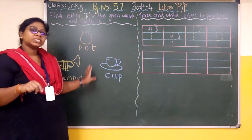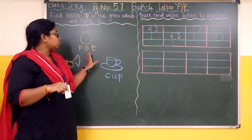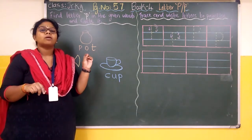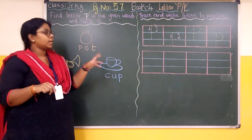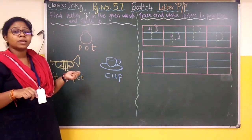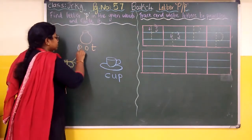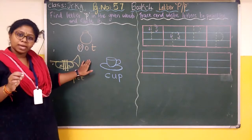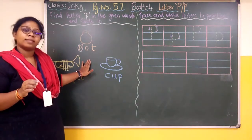I have three images. The first one is 'pot' — P-O-T, pot. So where is the letter P coming? The first letter itself is P. So you will make a small circle around that letter.